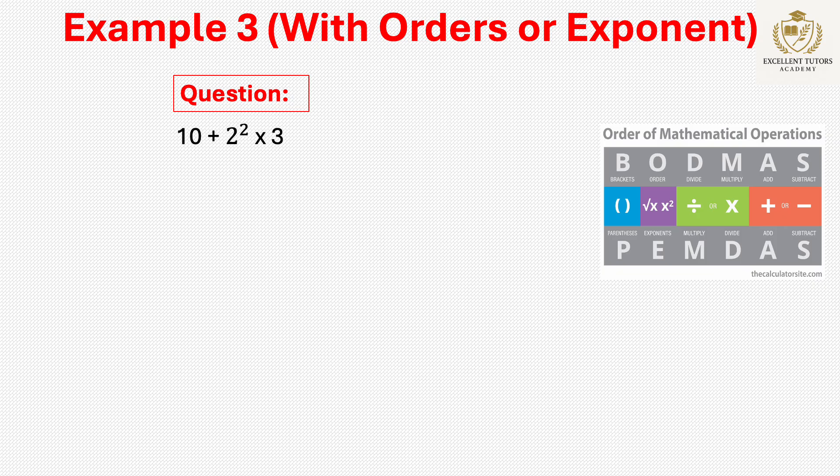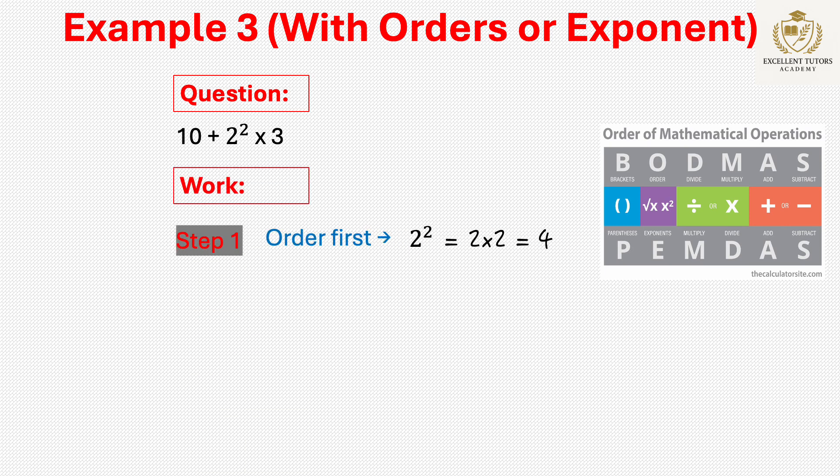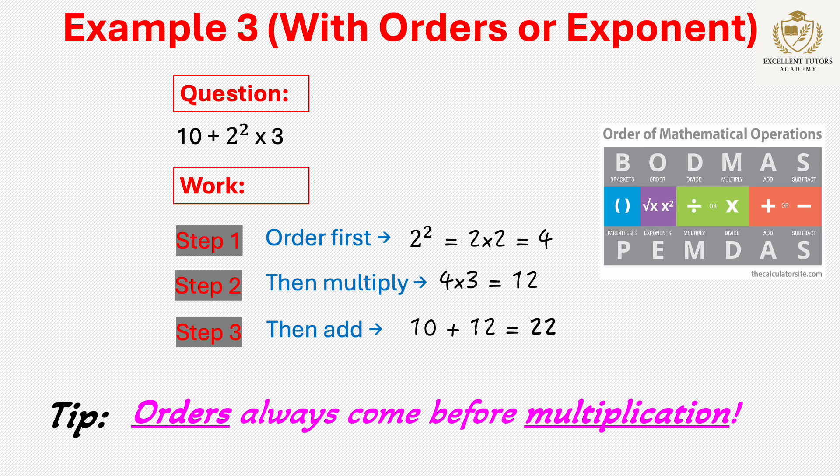Example 3: 10 + 2² × 3. Step 1: Orders—2² = 2 × 2 = 4. Step 2: Multiply 4 × 3 = 12. Step 3: Add 10 + 12 = 22. Remember, always solve the order or exponent first before multiplying.